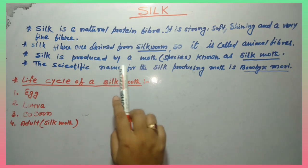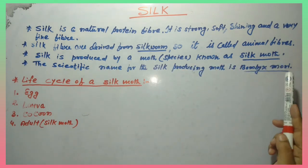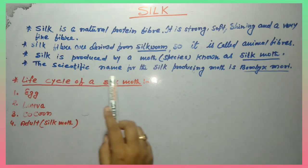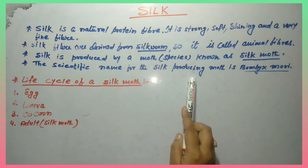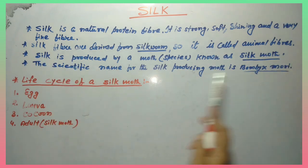Silk is produced by moth species known as silk moth. The scientific name for the silk producing moth is Bombax mori. So this is the definition of silk.